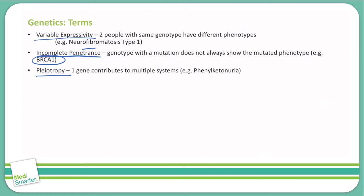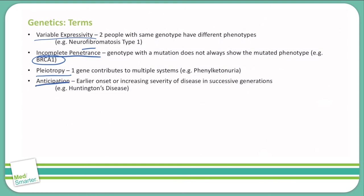Anticipation is where you see earlier onset of the disease in successive generations. So if a mother has something like Huntington's disease and she passes that gene to her daughter, her daughter will likely begin showing symptoms of Huntington's disease at an earlier age.